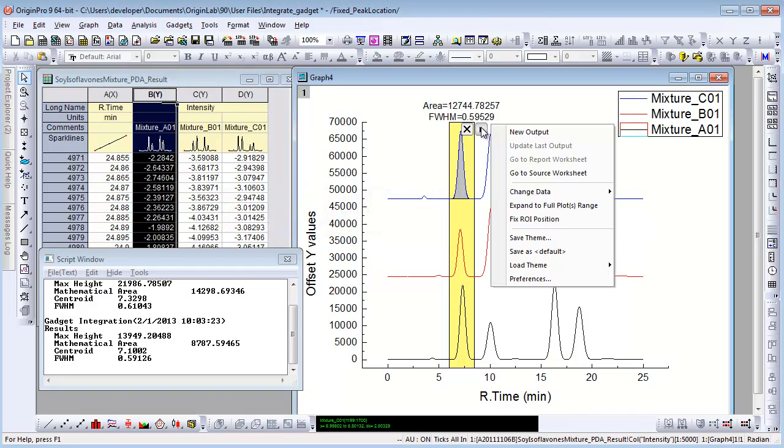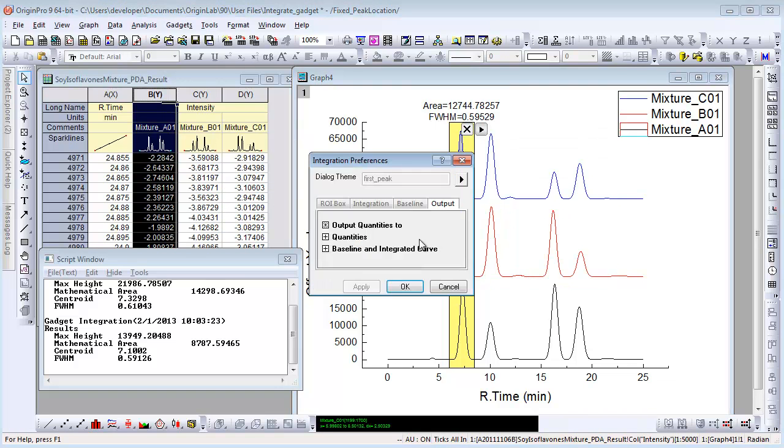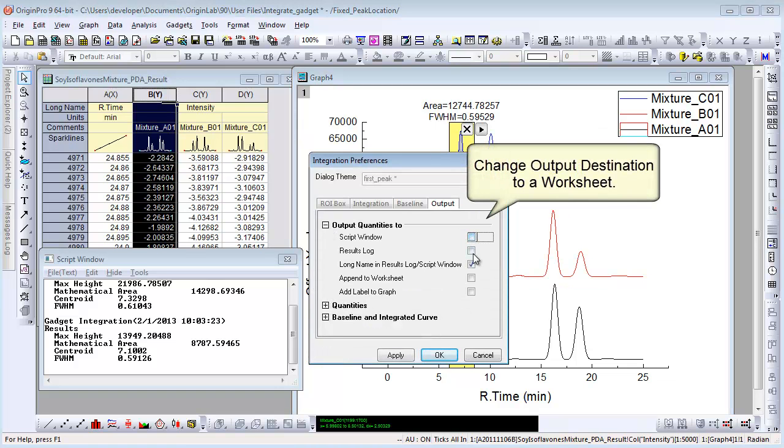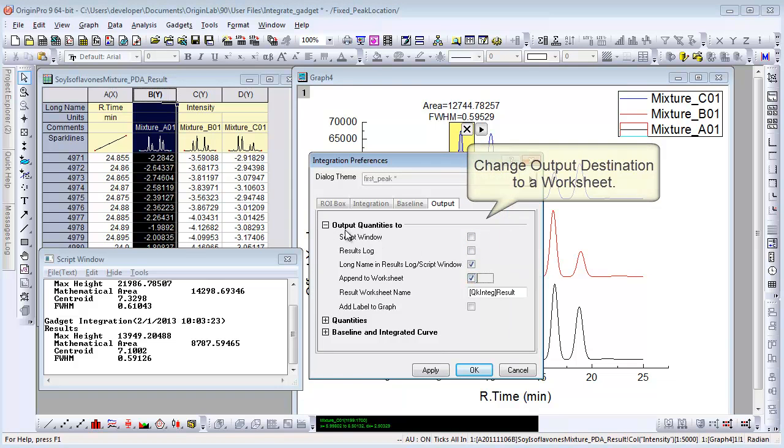We can also change the output destination. Let's choose Preferences again. On Output tab, uncheck Script Window and check Append to Worksheet.